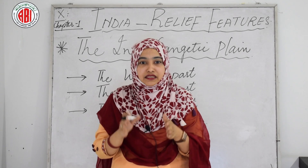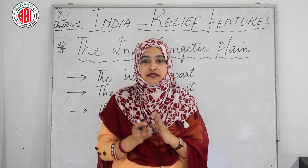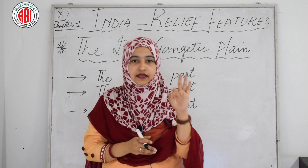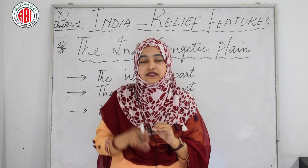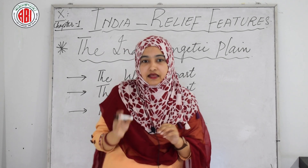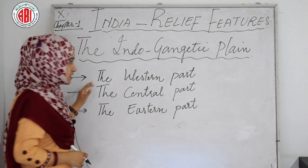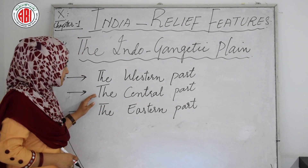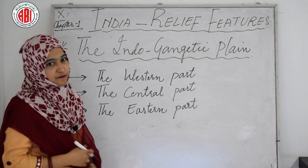The Indo-Gangetic Plains broadly consists of three divisions. It is divided into three parts: the western part, the central part and the eastern part.